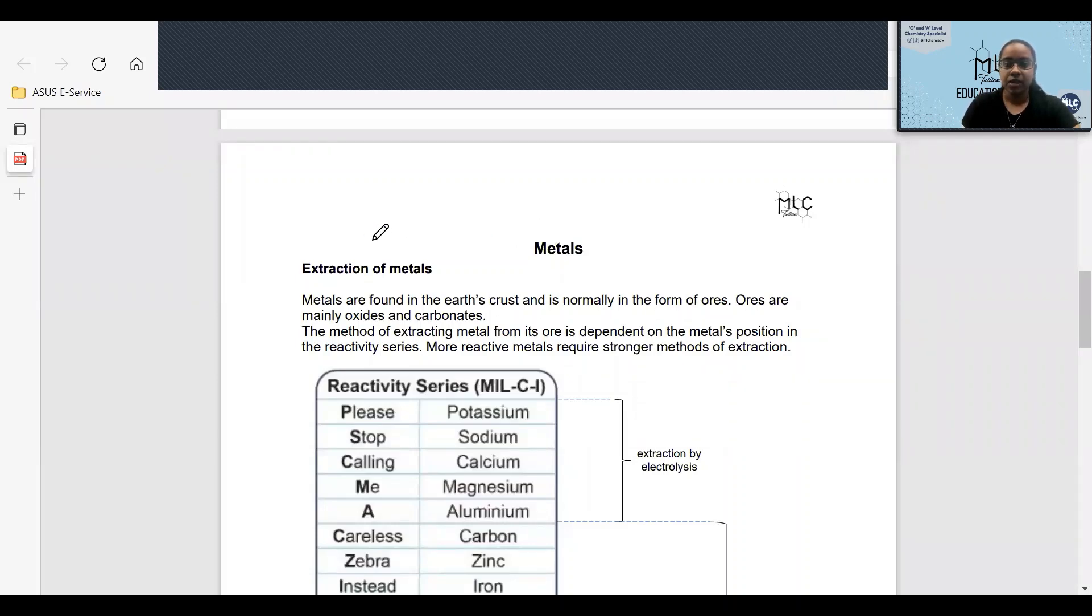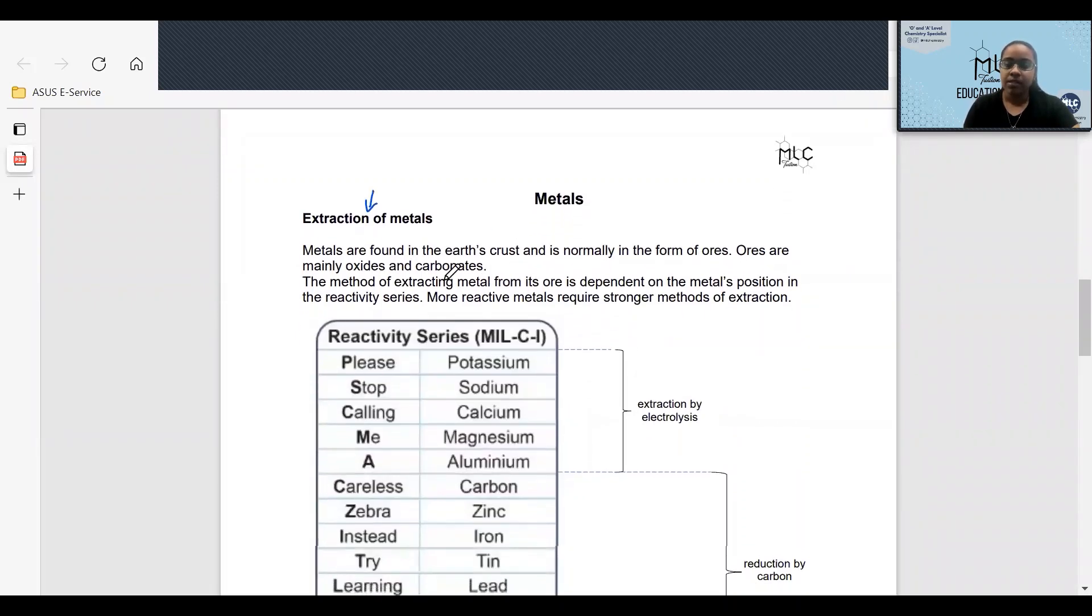Okay, today on metals, I will be going through the extraction of metals. Metals are found in the earth's crust and is normally in the form of ores. What are ores? Ores are mainly oxides and carbonates. The method of extracting metal from its ore is dependent on the metal's position in the reactivity series.